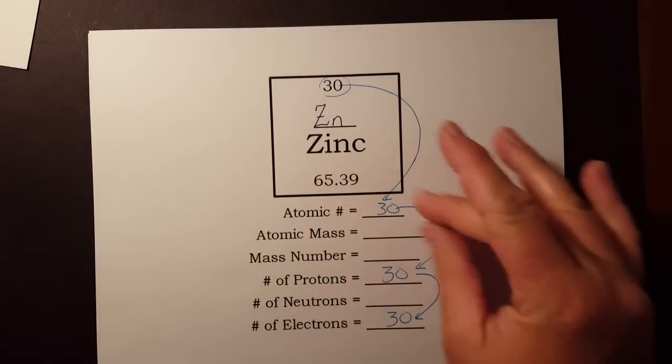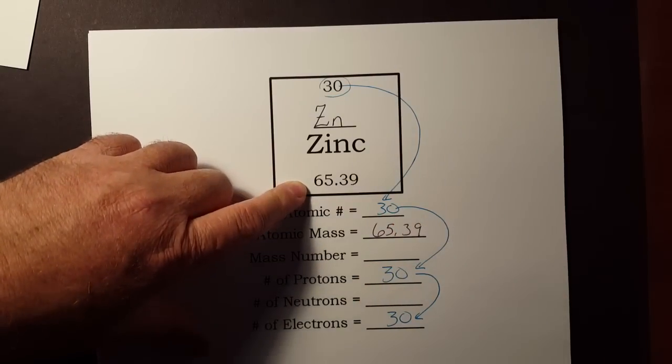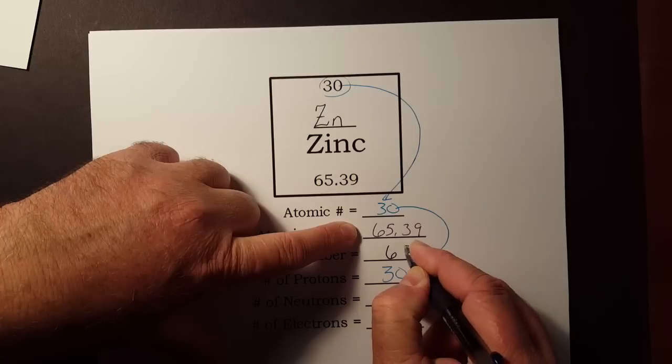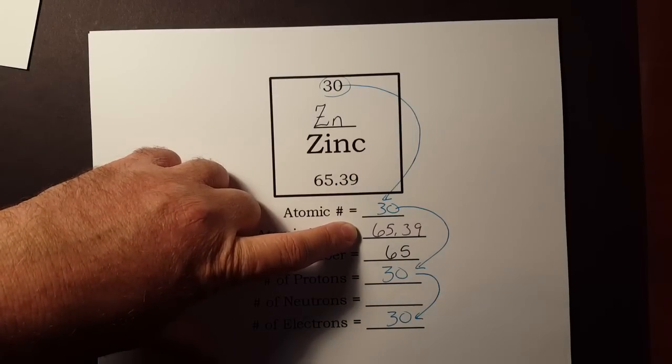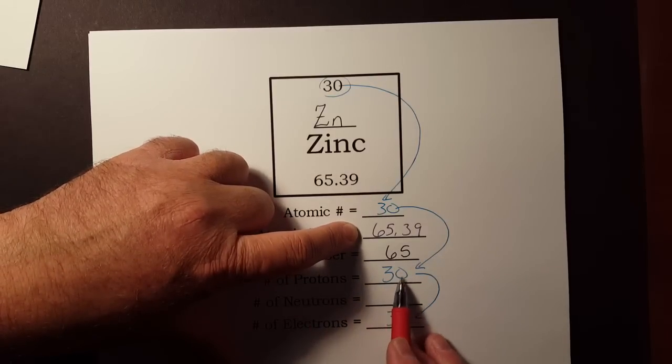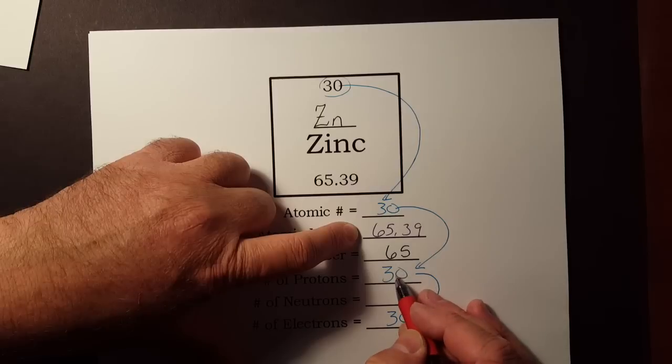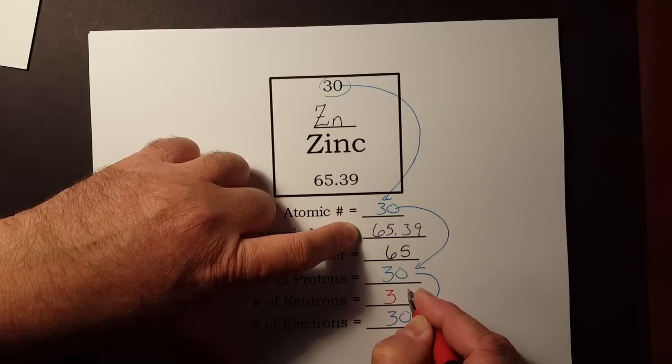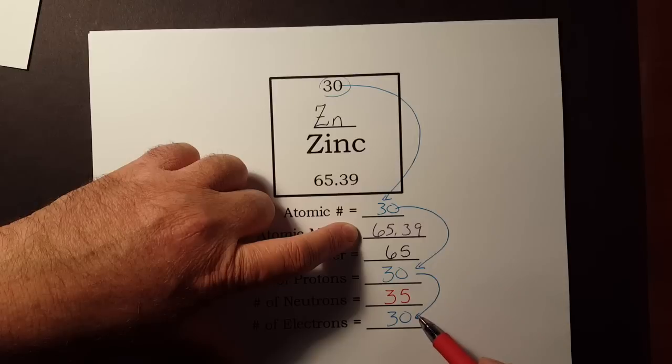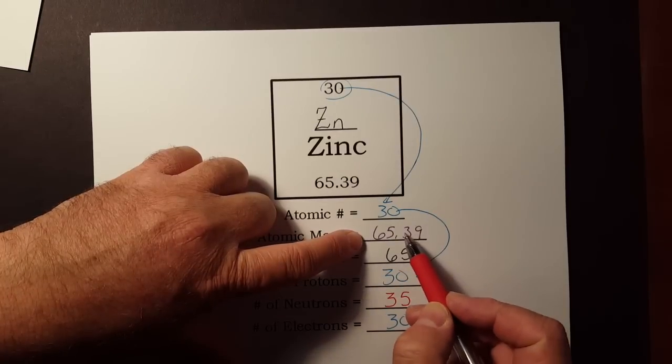The atomic mass, we need all the decimals, 65.39. When we round that to its nearest whole number, we don't care about the 9. That 0.3 says stay the same, so that is 65. Now to find my neutrons, this mass number is protons plus neutrons. We already know that 65, 30 of those are the protons. All I really need to do is subtract. I need another 35 to make the mass number 65. So protons equal to electrons. The protons plus neutrons equals the mass number that we got by rounding.